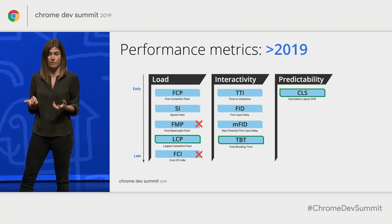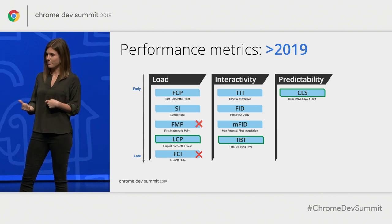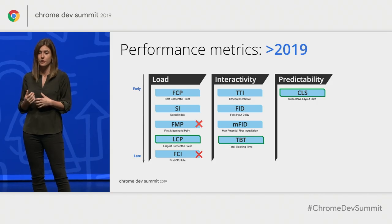We're excited to have metrics available that better capture when a page feels usable, which leads me to the second major callout — the new metrics you see added. Largest contentful paint, total blocking time, and cumulative layout shift are all out and available. These new metrics help to fill some of the gaps in our measurement story.